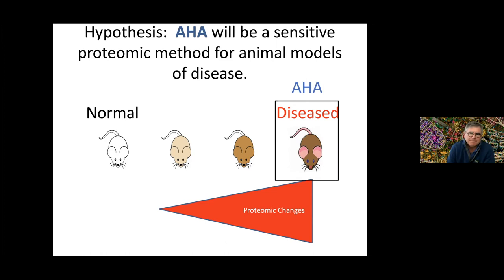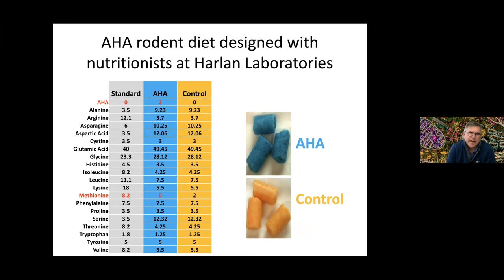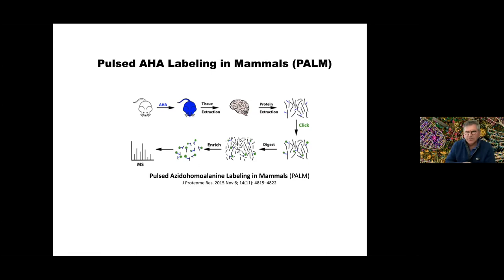We want to do this on animal models of disease, so we made a rodent diet — designed with nutritionists at Harlan Laboratories — where we added AHA to the feed and eliminated methionine. We tested different time points: two days, four days, six days. The animals seem to do okay up to about six days, but they start losing a little weight at six days, so going beyond that might be a problem since we're depleting methionine, which is an essential amino acid. We label the animals with AHA, do tissue and protein extraction, then perform avidin enrichment — digesting first and then enriching — which gives us much better recoveries and cleaner signal. We call this process POM.